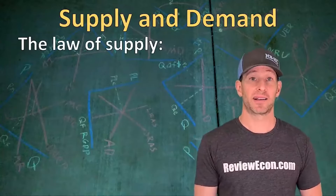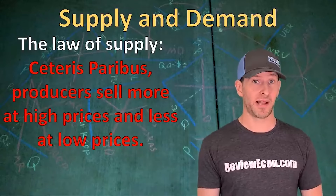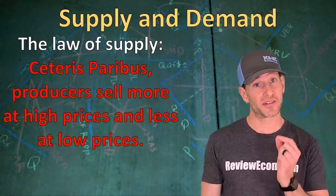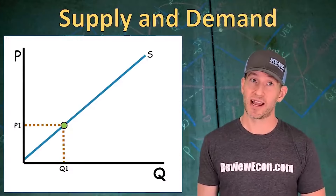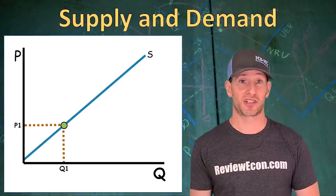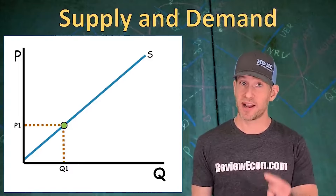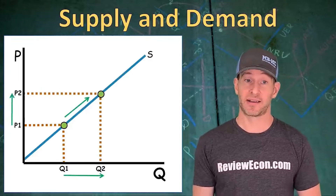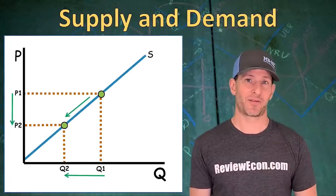Next up we have supply. Ceteris paribus, an increase in price will cause an increase in the quantity supplied, and a decrease in price will cause a decrease in quantity supplied — there's a direct relationship. When we put it on the graph, that's illustrated as an upward sloping supply curve. Price changes quantity supplied; it does not change supply.